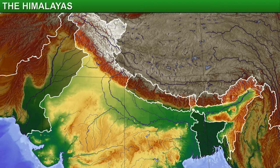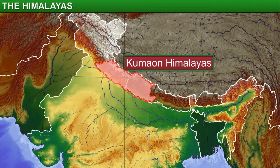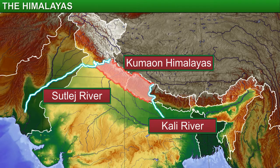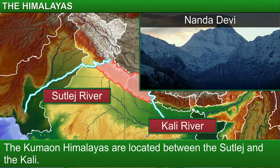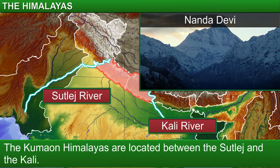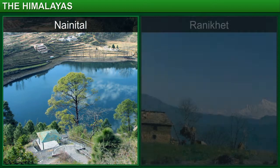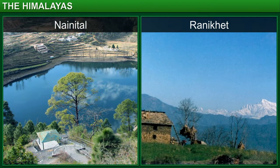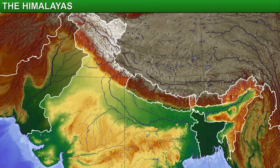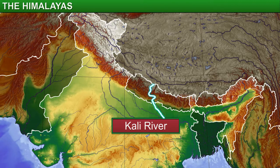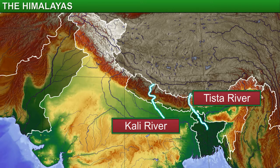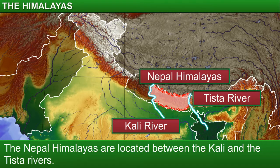To take another example, the Kumaun Himalayas is the name used regionally for the portion of the Himalayas between the Sutlej and the Kali rivers. Nanda Devi is the highest peak in this region. The hill stations Nainital and Ranikhet are located in the Kumaun region. Similarly, the area that lies between the Kali and the Tista rivers is known as the Nepal Himalayas.